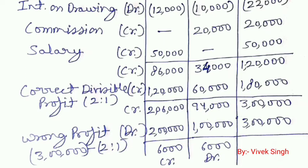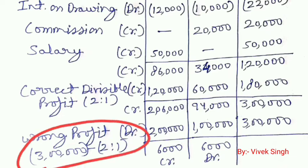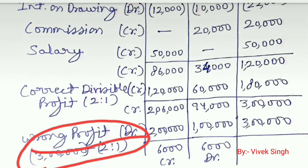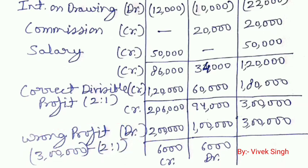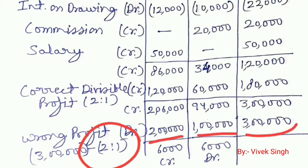We need to take back the wrong profit from the partners, so we write it as a debit balance. We distribute 3,00,000 in the ratio of 2:1: A gets a debit of 2,00,000 and B gets a debit of 1,00,000, totalling 3,00,000.